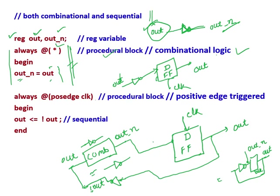Then, always @(posedge clock) — this is again a procedural block but with posedge clock in the sensitivity list, so this is a positive-edge-triggered sequential logic. Out <= ~out using non-blocking assignment. Normally for combinational logic we use blocking assignment, and for sequential logic we use non-blocking assignment. If there is a positive edge of clock, this always block will be activated and the statement will be evaluated: out gets not of out. This is the block diagram for this logic — a D flip-flop with a not gate.